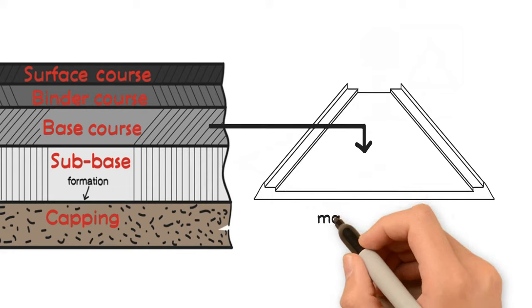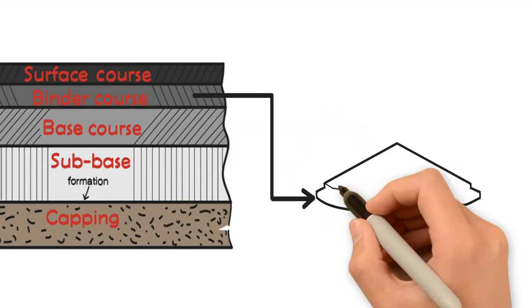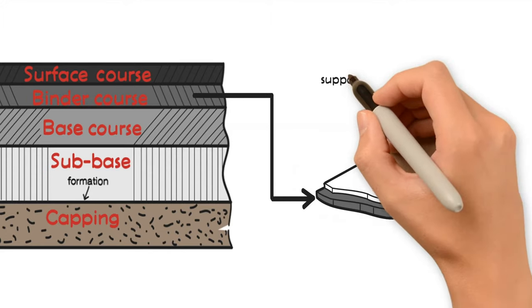The base course is the main road layer of the structure. The binder course supports the wearing course and also assists in protecting the road.